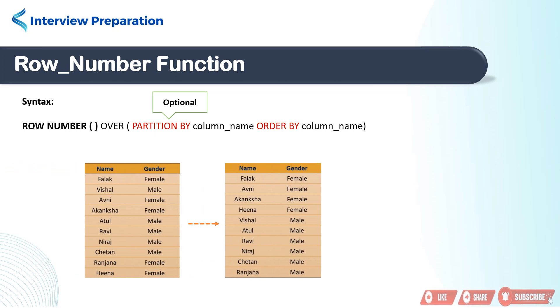In this example, we have done partition on gender. So, female rows make one partition and male rows make second partition. Then ORDER BY sorts the rows in a defined order and assigns numbers to query result set.